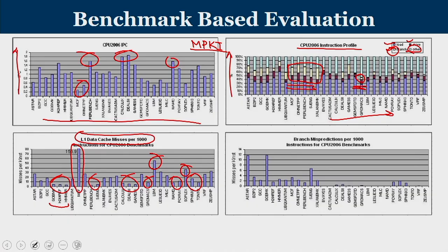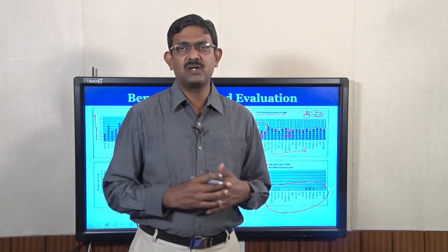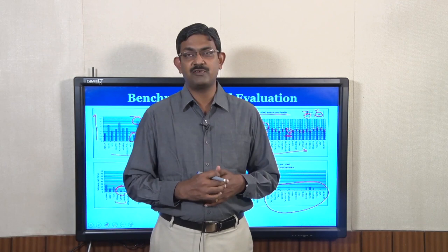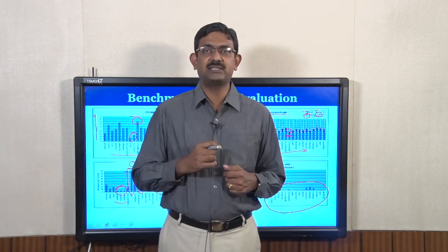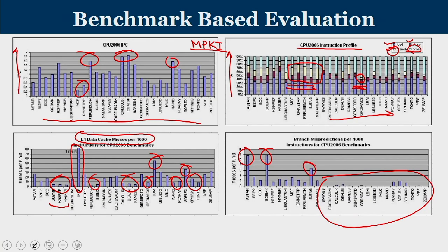One more metric is branch mispredictions per 1000 instructions. Branch predictor circuits help predict whether a branch will be taken or not before the actual execution. If the prediction is correct, the next instruction fetched will be the correct one. However, certain benchmarks show many mispredictions where predictors are not giving good output. This metric helps us determine whether a branch predictor will benefit a particular program or not.